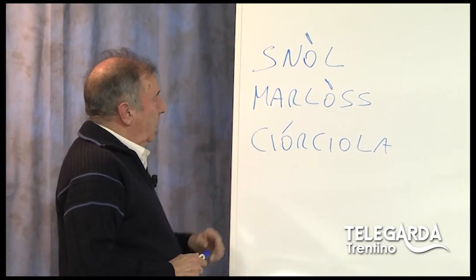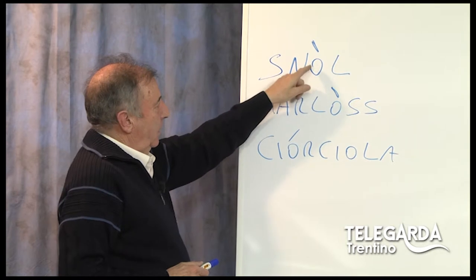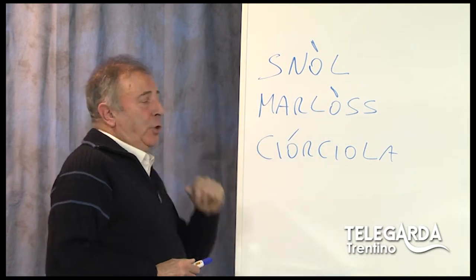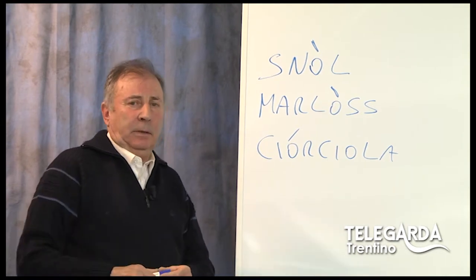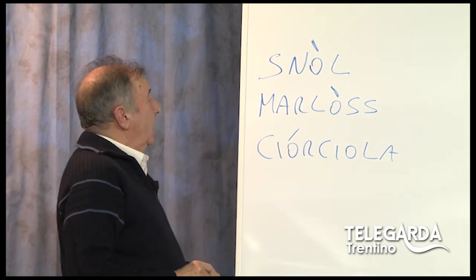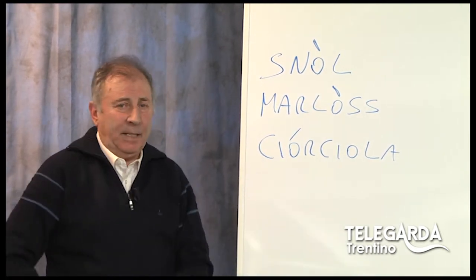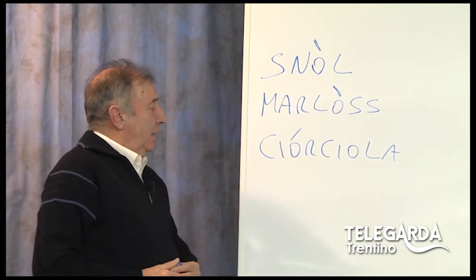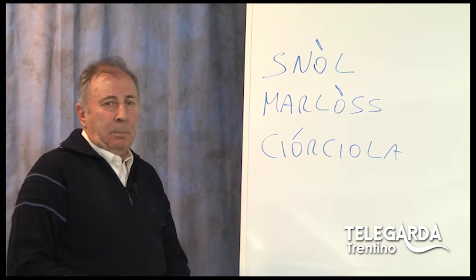Avevamo tre parole: Snol, Marlos, Ciorciola — accento tonico e accenti fonici aperti, accento tonico e accento fonico chiuso. Lo Snol sarebbe la maniglia della serratura di casa, della porta. Il Marlos, sempre per stare in questo settore degli infissi, è il lucchetto. La Ciorciola invece è la pigna, quella che cade dalle piante e che troviamo spesso a terra, e che a volte ha dentro i pinoli.